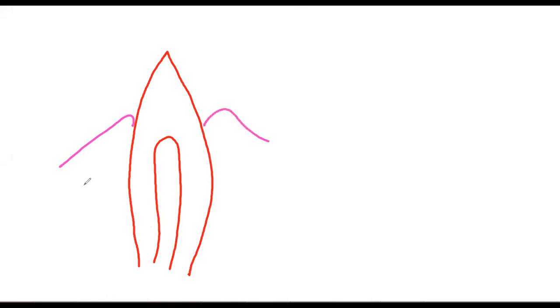Unfortunately our previous drawing was cut, so I will draw again — only the remaining part. You can synthesize by combining both. So we have made this type of tooth showing the dentine, the pulp cavity, and the gums.